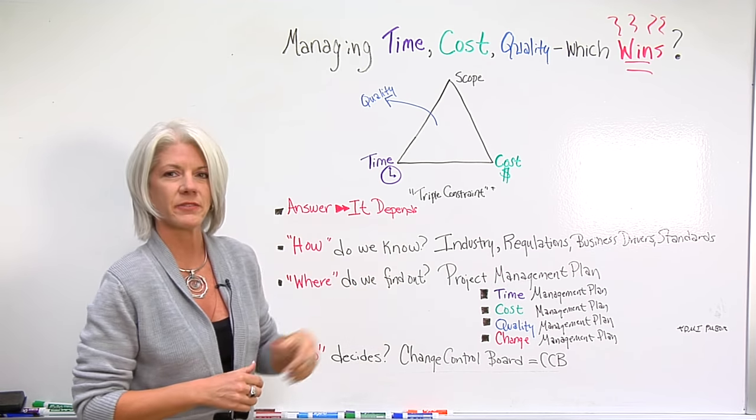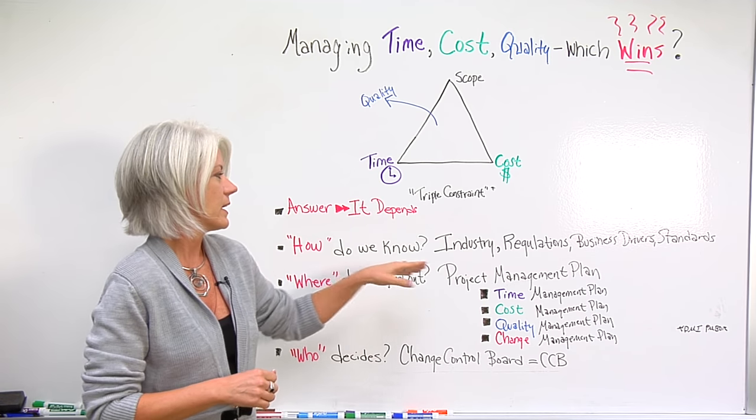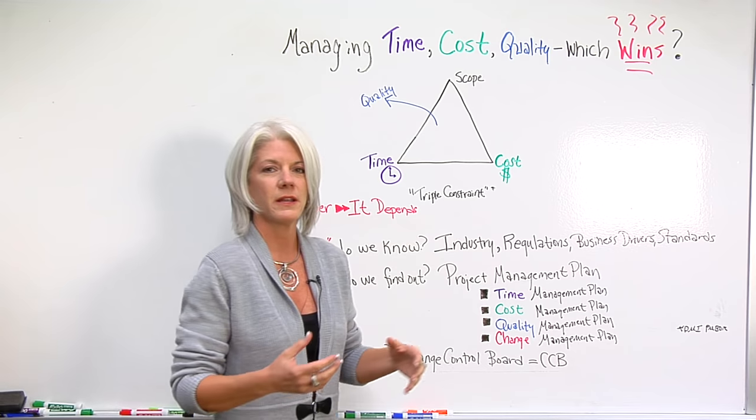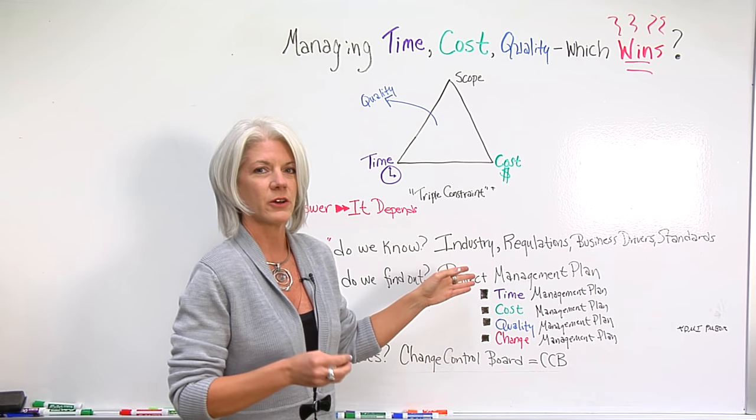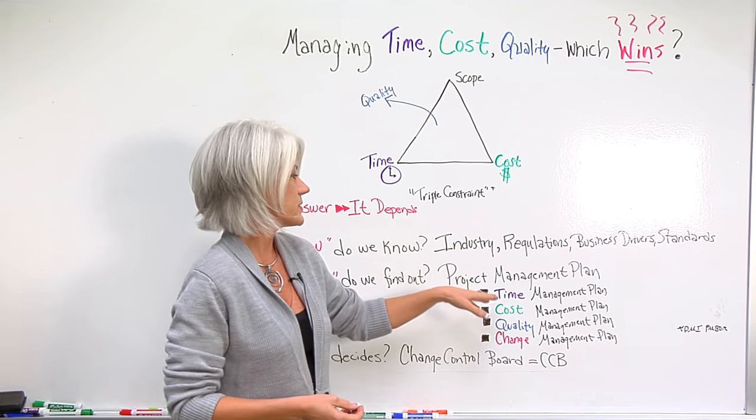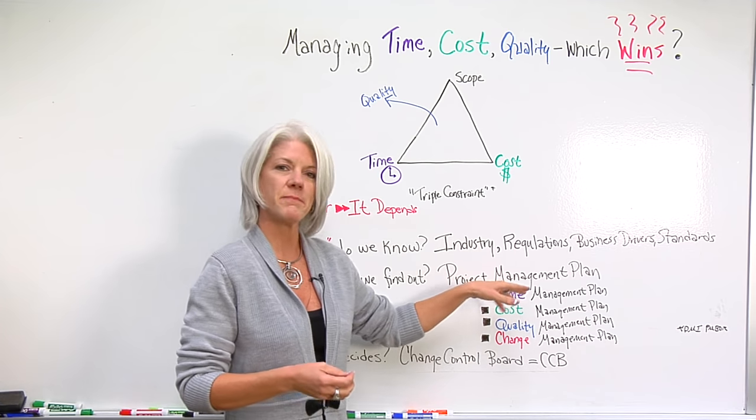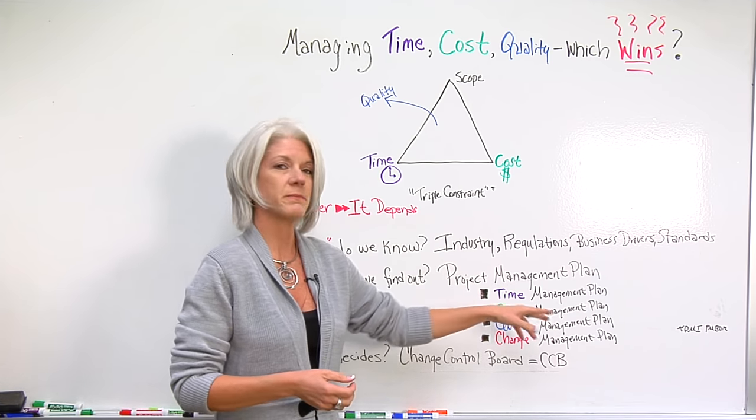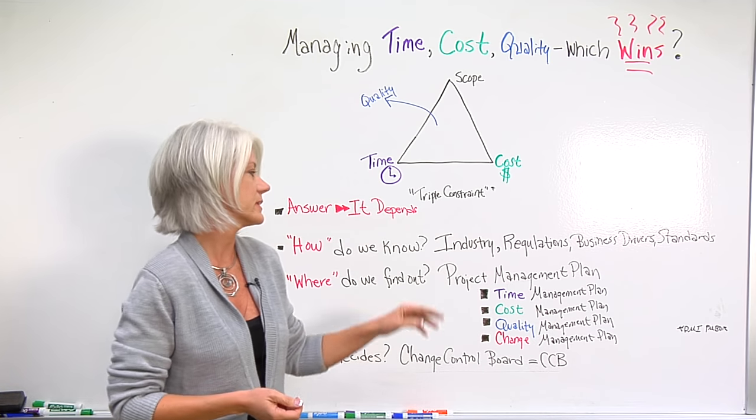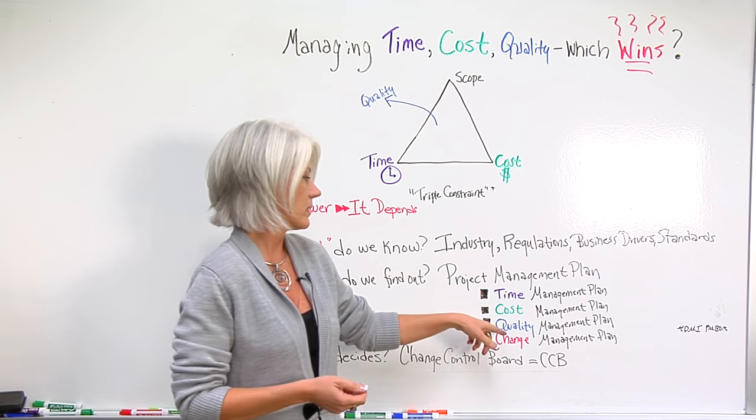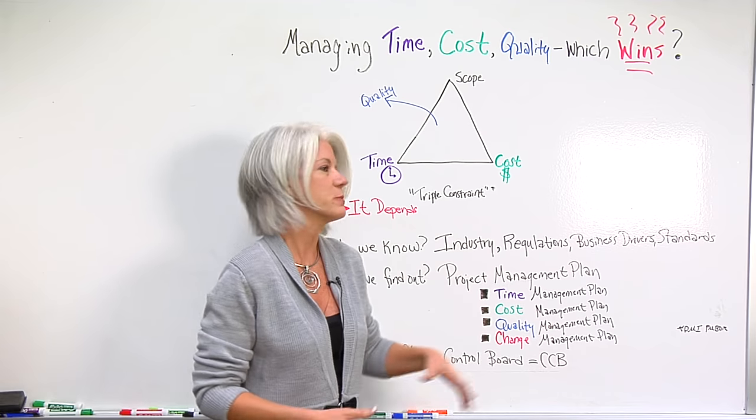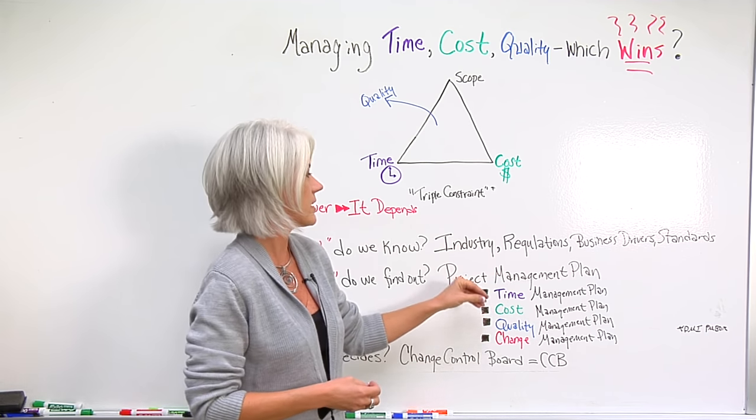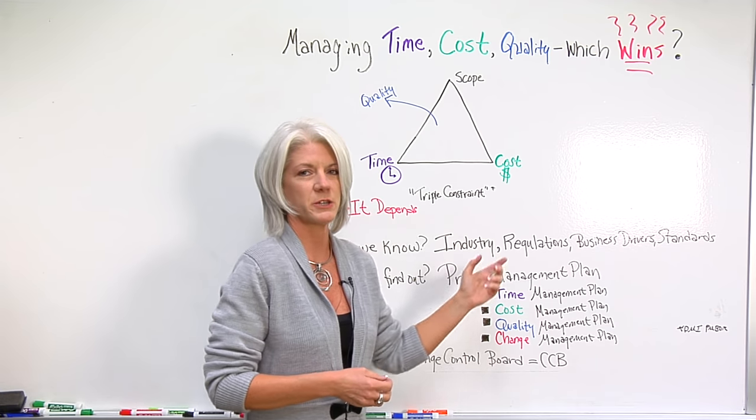Where do we find out this information? There are different pieces of the project management plan, and as we know, the project management plan also has sub-plans. Within that, we have the time management plan, the cost management plan, quality management plan, and the change management plan. All of these things are documented within these plans of the overarching project management plan.